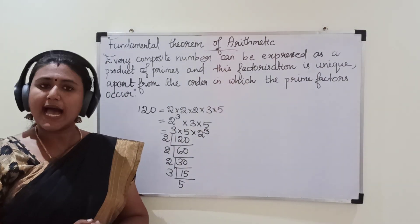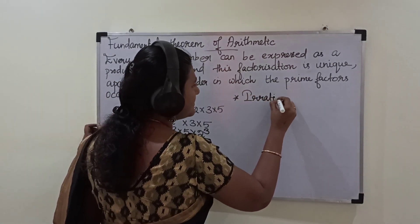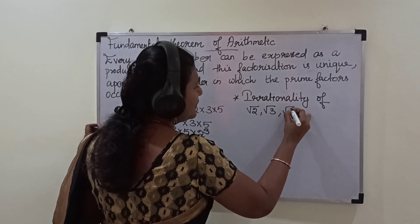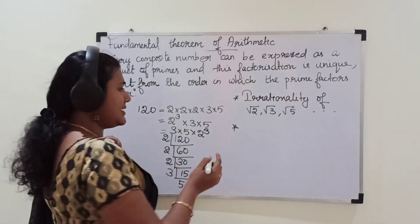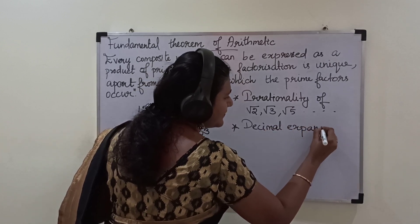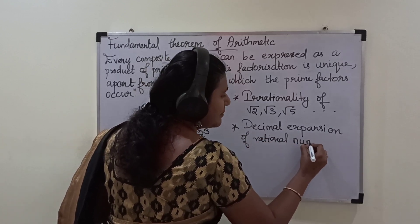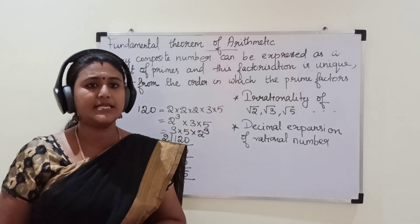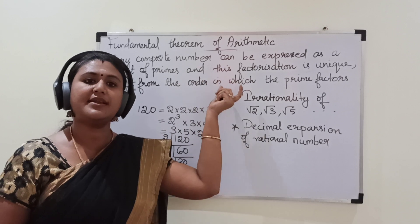Now we will see its applications. The first application is to prove the irrationality of numbers like √2, √3, √5, etc. The second application is the decimal expansion of rational numbers — when a rational number will have a terminating decimal expansion and when it will have a non-terminating repeating decimal expansion. These are the two important applications of the Fundamental Theorem of Arithmetic.